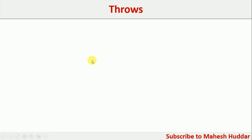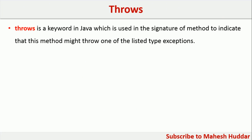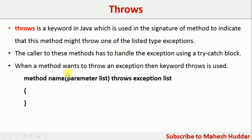Now we will see how we can use the throws keyword in handling exceptions. Throws is a keyword in Java which is used in the signature of a method to indicate that the particular method might throw one of the listed types of exceptions. Whenever we define a method, along with the definition we will use the throws keyword and list out all the exceptions this particular method may throw. For example, if you feel that this method will throw ArithmeticException, we will put that exception here. If the method may also throw IllegalAccessException, we will put that as well. If a method is going to throw multiple exceptions, we will list all of them.